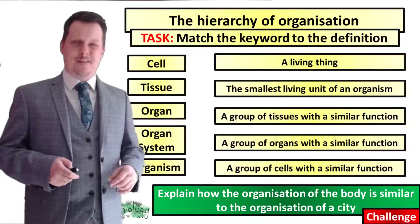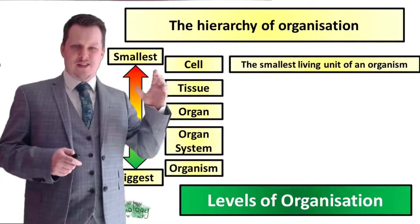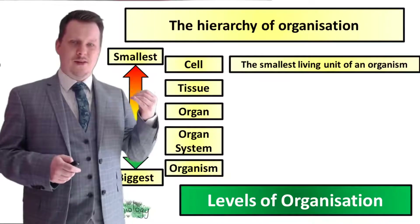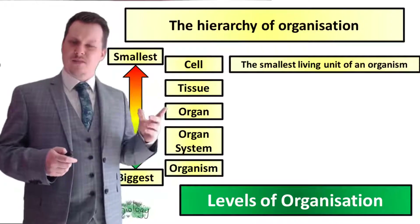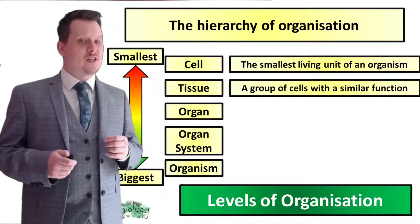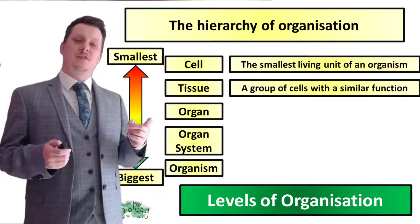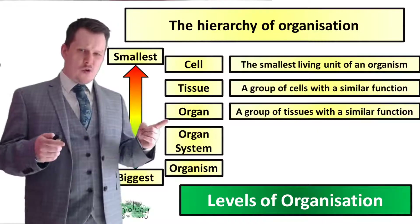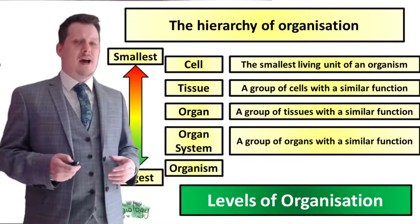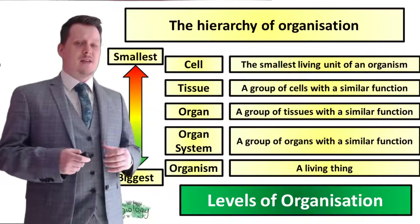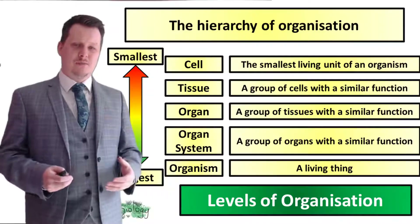OK, are we all finished? So starting with the smallest: the cell is the smallest living unit of an organism. A collection of cells with a similar function is a tissue, a collection of tissues with a similar function is an organ, a collection of organs with a similar function is an organ system, and then our largest is the organism which is a collection of organ systems.